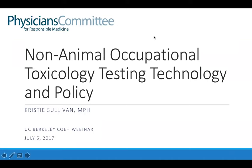Ms. Sullivan obtained her Bachelor of Science in Biological Anthropology and Master of Public Health degree in Toxicology from the University of Michigan. She has devoted her professional career to advancing the science of non-animal toxicology testing. Prior to working with PCRM, Ms. Sullivan was an analyst at the University of Michigan Environmental Health and Safety Department and later with the New York City Department of Health's Environmental Laboratory. At PCRM, Ms. Sullivan's role is to promote the development and use of human-relevant methods for testing, research, and training through collaboration with industry, academic, and government stakeholders on topics such as acute toxicity, skin and eye irritation, respiratory toxicity, and cancer risk.